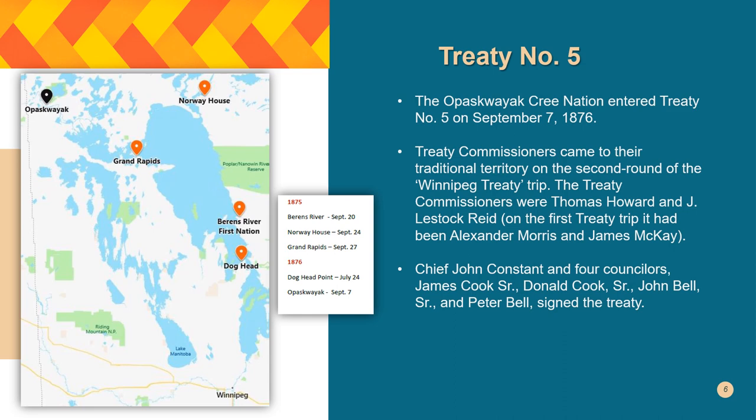Treaty 5 is also called the Winnipeg Treaty because the commissioners were traveling via Lake Winnipeg. There were two treaty trips, and you can see the dates on the map. The Cree chief at the time in OCN, Chief John Constant, signed the treaty, and four councillors — James Cook, Donald Cook, John Bell, and Peter Bell — signed Treaty Number Five for the Pasquoiac Cree.